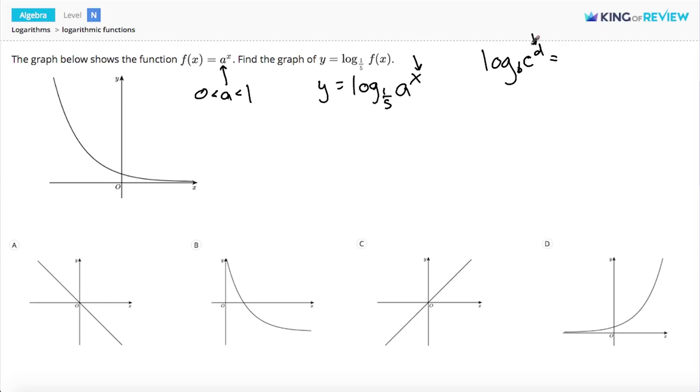and bring it in front of the log, so that it becomes d times the log base b of c. If we apply that property to our log here, we get that y equals x times the log base 1 fifth of a.